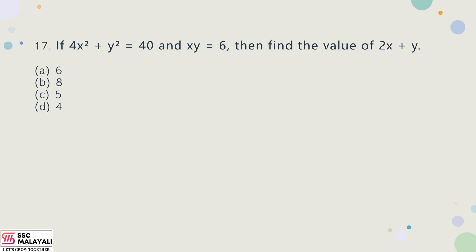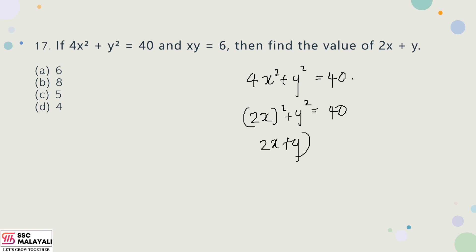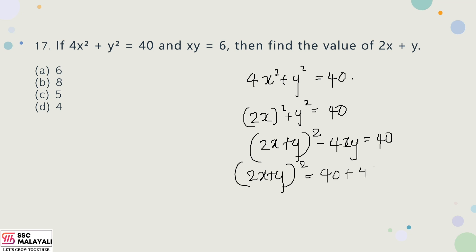Question number 17: If 4x² + y² = 40 and xy = 6, then find the value of 2x + y. We use the identity: (2x + y)² = 4x² + y² + 4xy = 40 + 4(6) = 64. Therefore, 2x + y = √64 = 8. Option B is the correct answer.